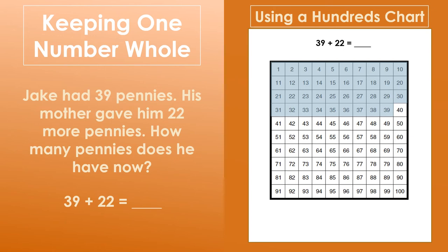Then we can add on 1 to make the friendly number 40. 39 plus 1 equals 40. Then we can add on 20. 40 plus 20 equals 60.